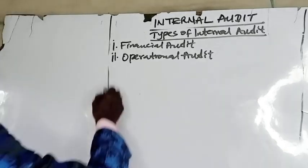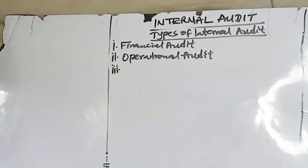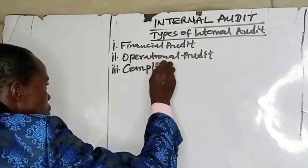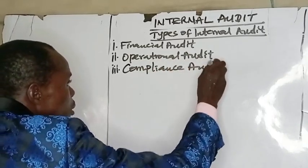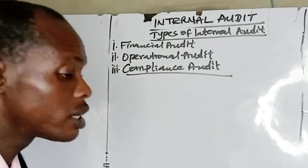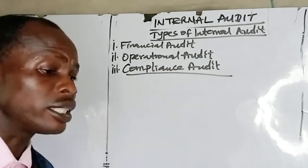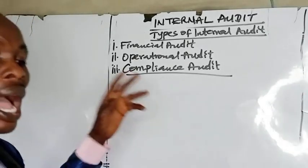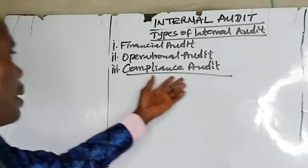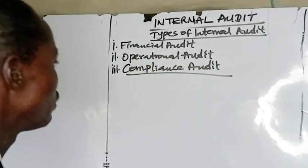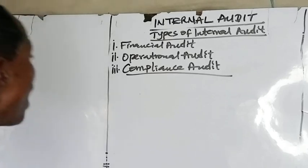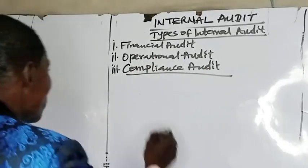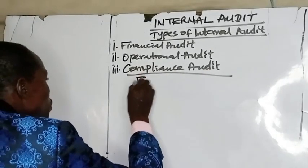Number three, we have compliance audit. Compliance audit involves establishing whether the significant laws and regulations are being complied with.